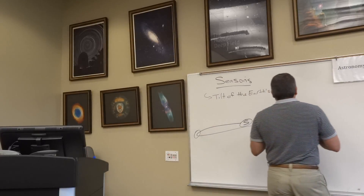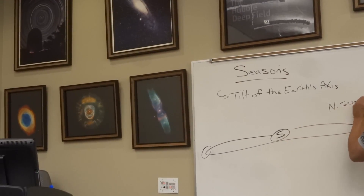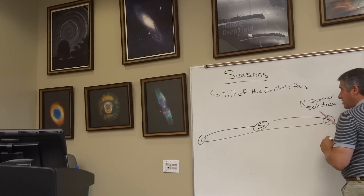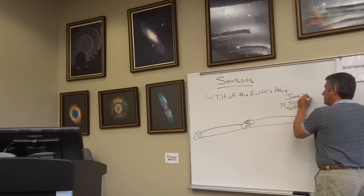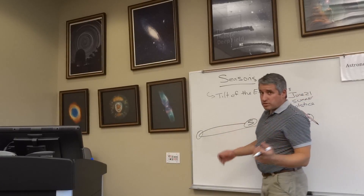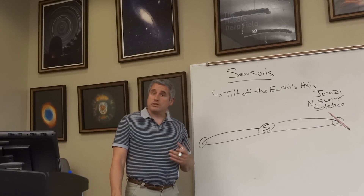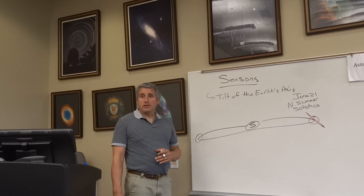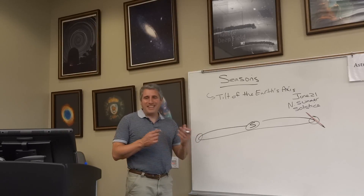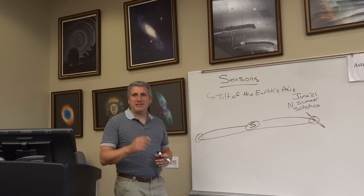For the Earth, it's 23.5 degrees. This represents the northern summer, also known as the summer solstice. The date for the summer solstice is June 21st. You should note that June 21st is also the winter solstice for people in the southern hemisphere — they are tilted away from the sun, so their shortest day of the year is June 21st. Holidays we associate with summer, they associate with winter.